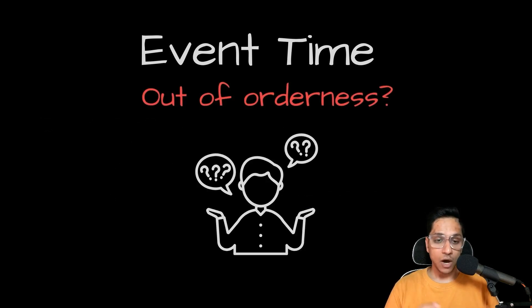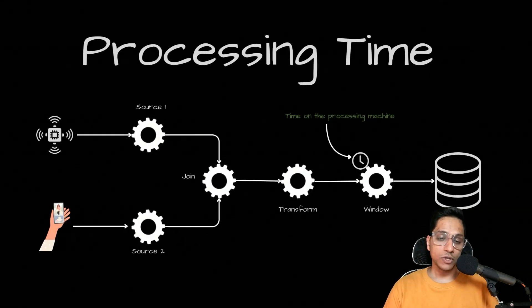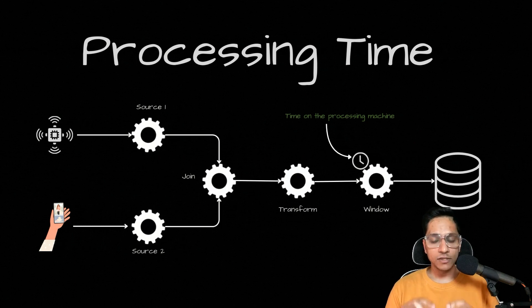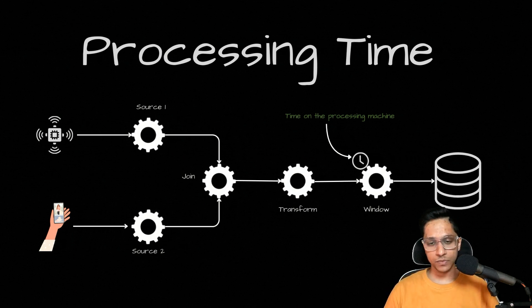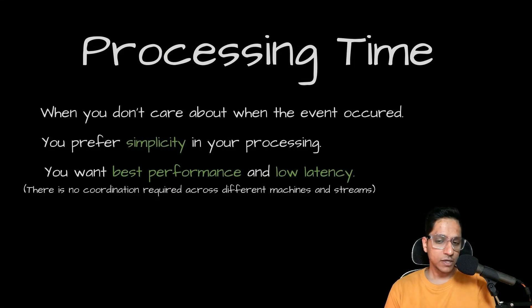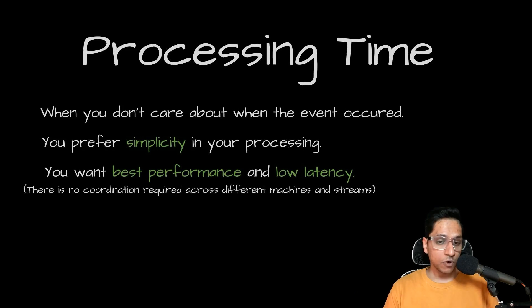However, challenges such as out-of-orderness arise due to differences in event arrival latency, and we'll look at how we can handle that and provide a better mechanism to address out-of-orderness. Processing time, on the other hand, is the wall clock time on the particular machine executing the stream operation. This means processing is based on when the event is processed rather than when it occurred. Processing time simplifies processing by eliminating concerns about late events, because the time is only recorded when the event arrives. It also ensures low latency and optimal performance without the need for coordination across machines or keeping track of event time.